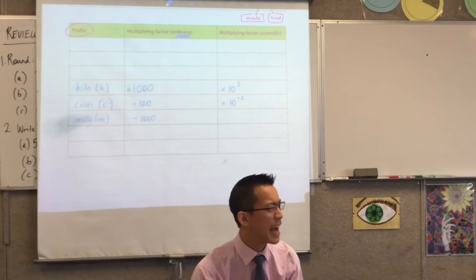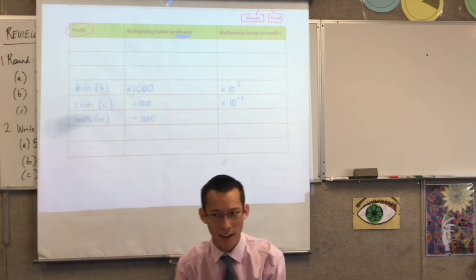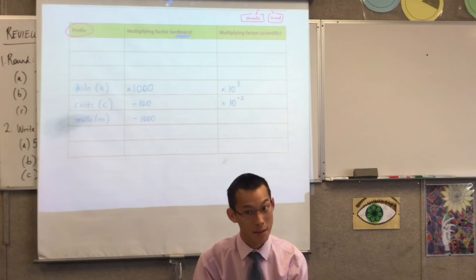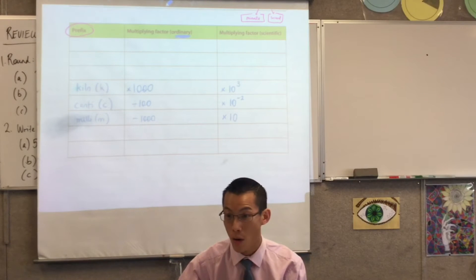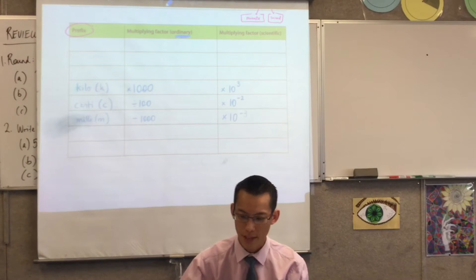Because you've got 10 millimeters in a centimeter, and 100 centimeters in a meter, yeah? So, I've got three zeros altogether, so I'm going to multiply by 10 to the power of negative 3.